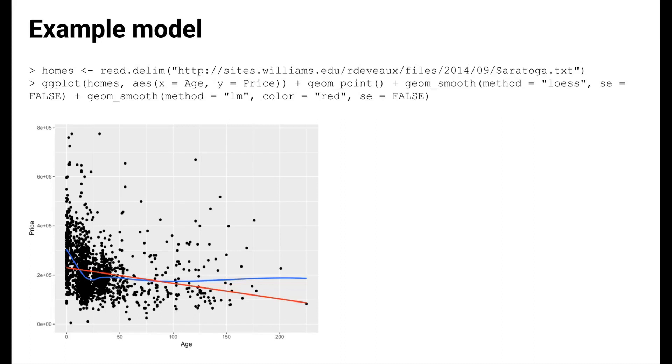We add a smooth trend in blue to the plot, and we see that there looks to be a linear decrease in price with increasing age at the beginning, but the relationship seems to flatten out. We also add a red linear trend line to show what a simple linear regression model of price on age would look like.